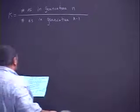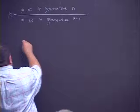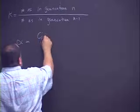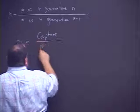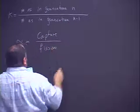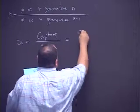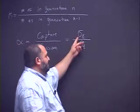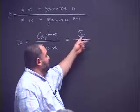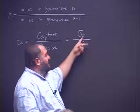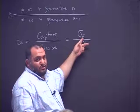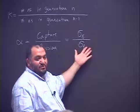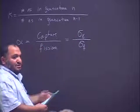Let's look at certain definitions. We define the ratio alpha, called the capture-to-fission ratio: alpha = σ_γ / σ_f (radiative capture over fission cross section). If we multiply by the number density of the fuel, this gives the macroscopic cross section, and multiplying by the flux gives total absorptions divided by total fissions. So alpha is the absorption-to-fission ratio.